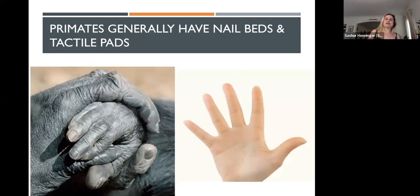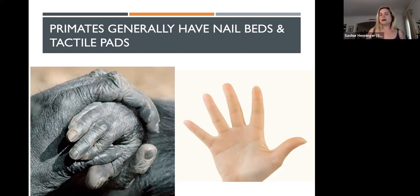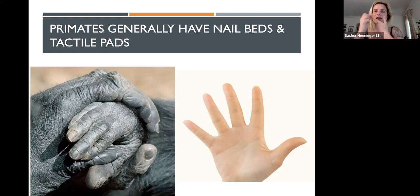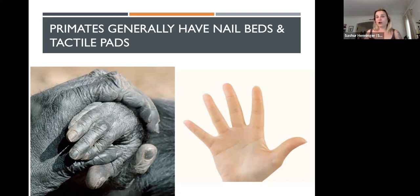Primates also have nail beds and nails instead of claws, and tactile pads. These lines on your hands are genetically predetermined, just like your fingerprints, and are there for extra grasping grip. Nails instead of claws increase the sensitivity of the tips of the fingers. The large majority of our sensory information actually comes through our hands.